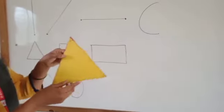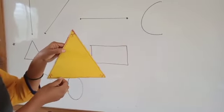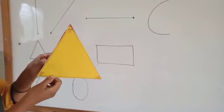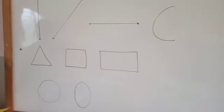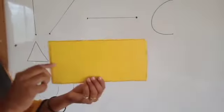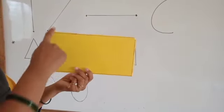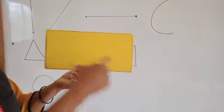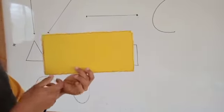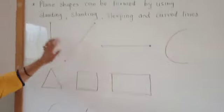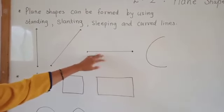With the help of three lines — two slanting lines and one slipping line — it becomes a triangle. This is a triangle. This is a rectangle: two slipping lines and two standing lines. It is called rectangle. So rectangle means with the help of standing lines, slanting lines, and slipping lines we get plane shapes.